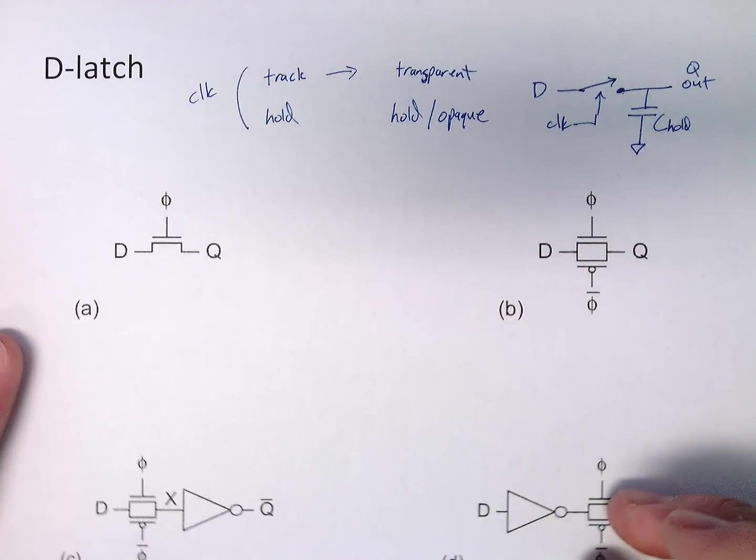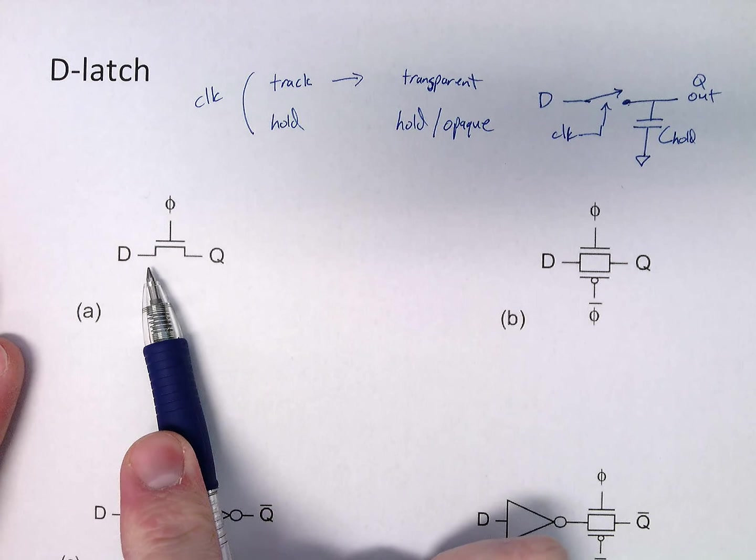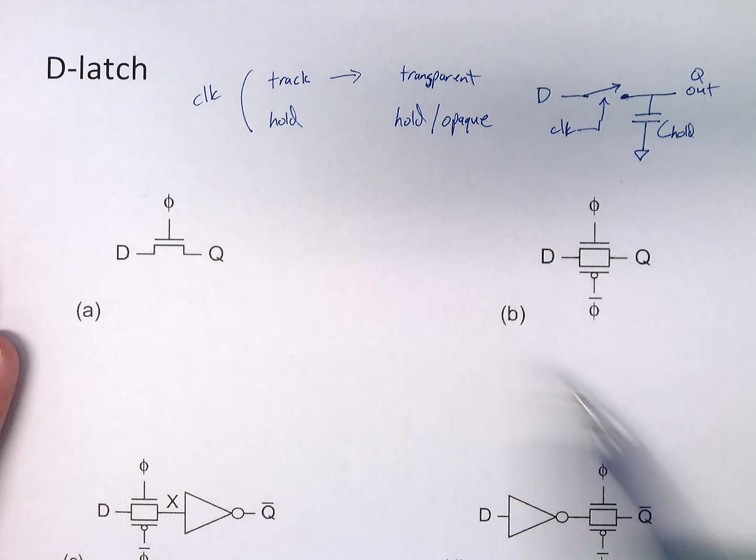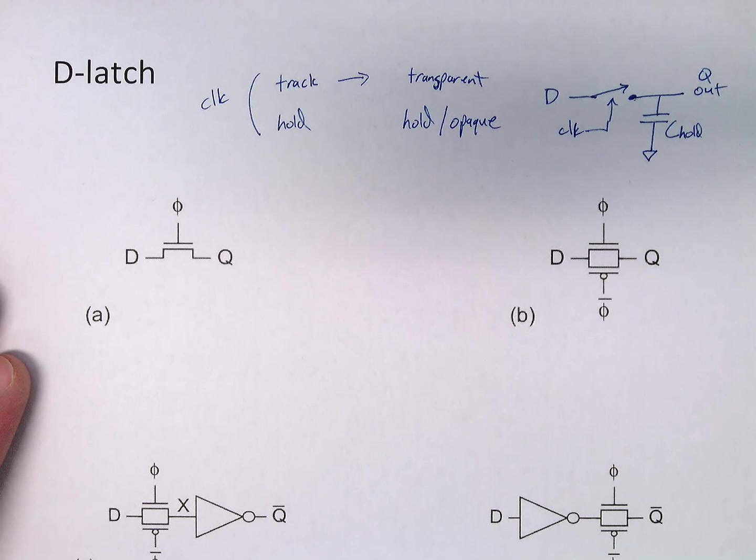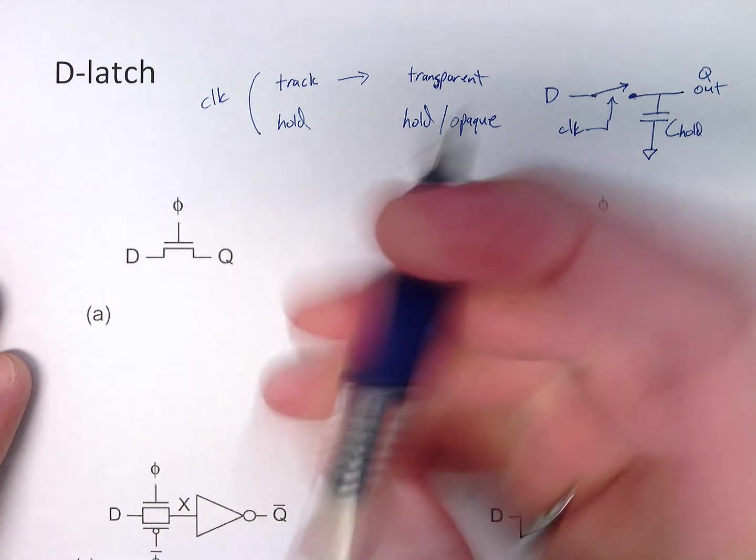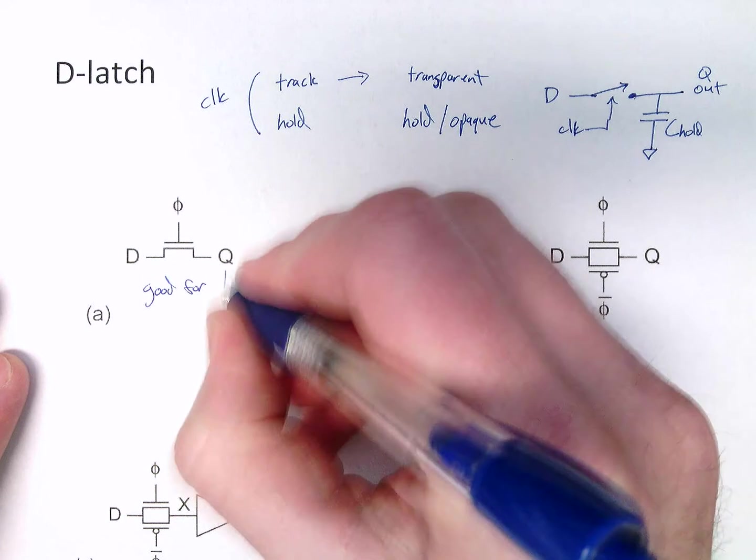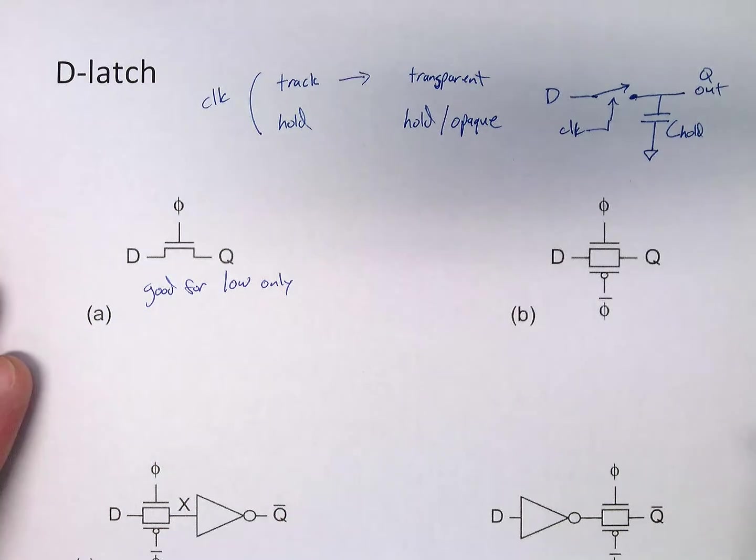How do we do a switch in CMOS? Well, remember, we have MOSFETs, or switches. Here's our clock phase. And we have a switch here. We have a switch. This is good for, it's really only good for low only.